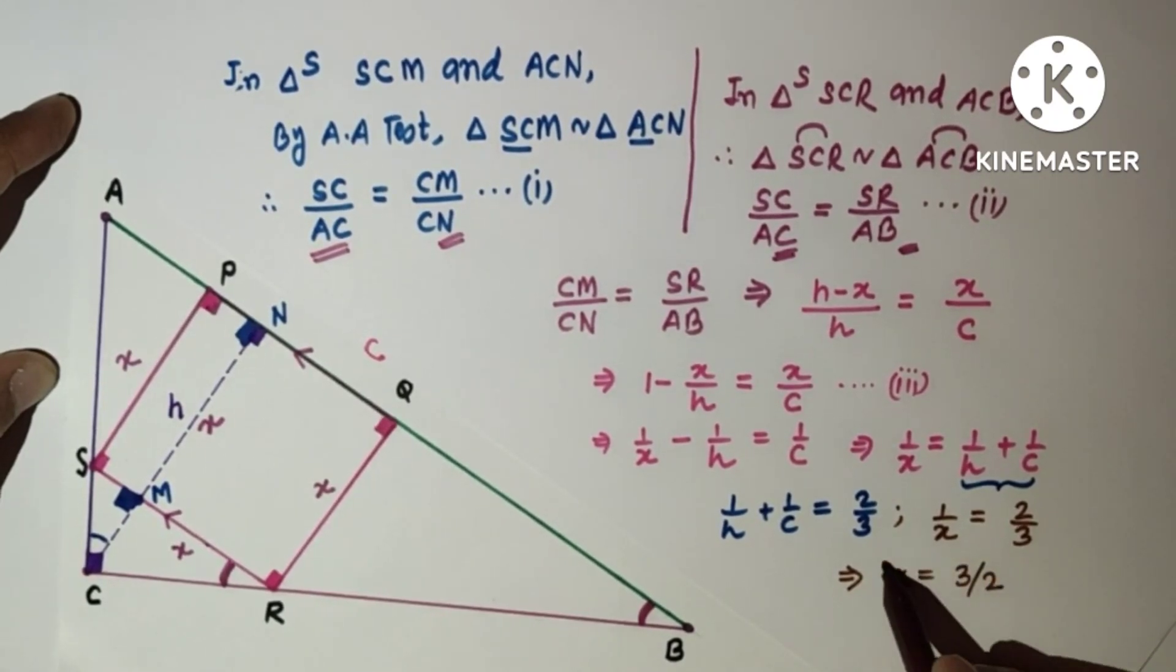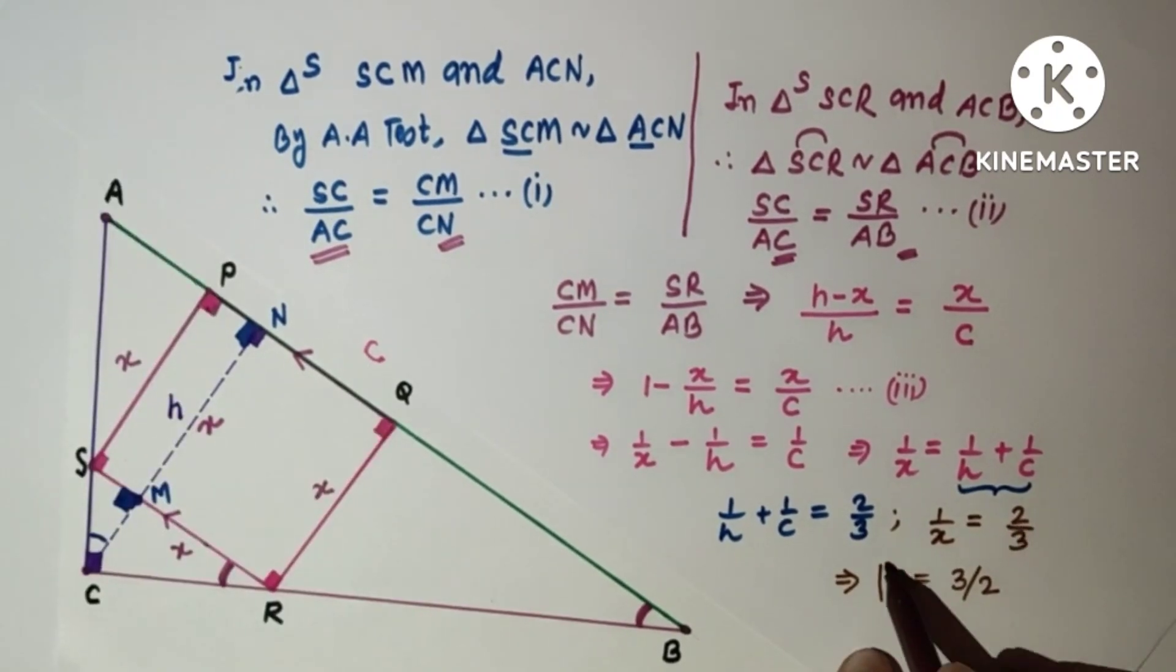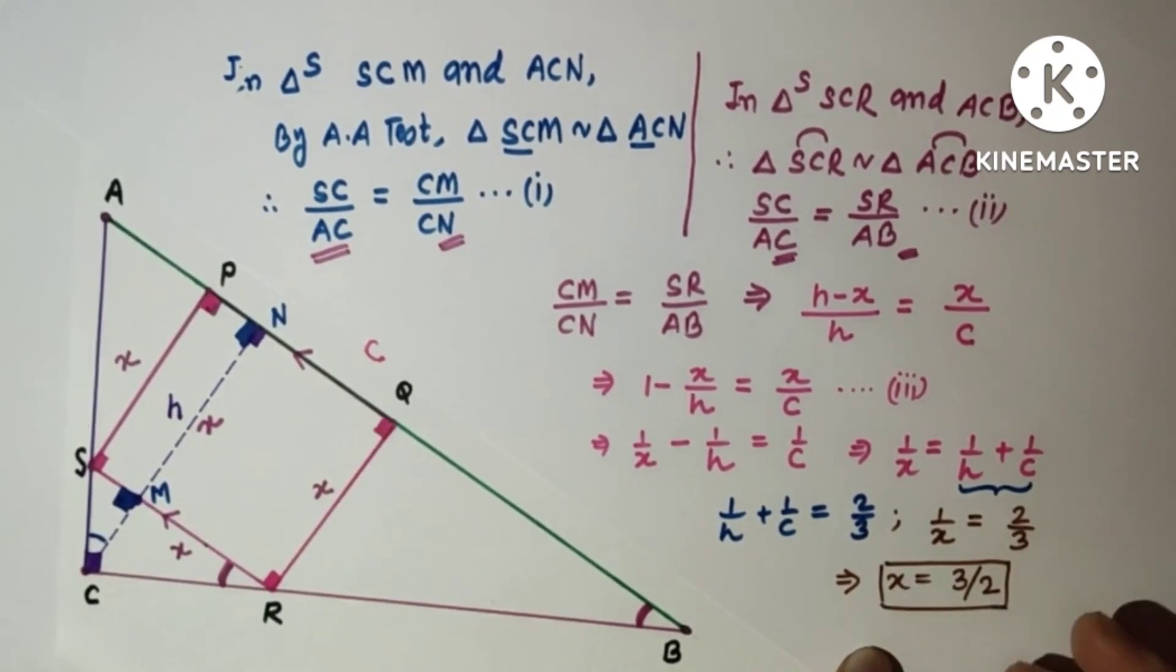So the answer is x = 3/2, and option (c) is correct.